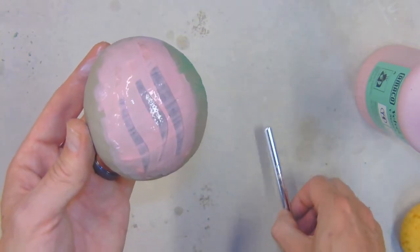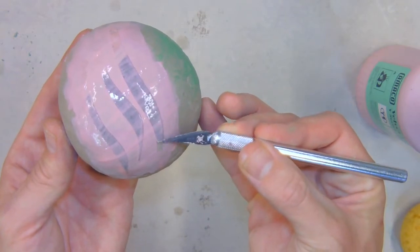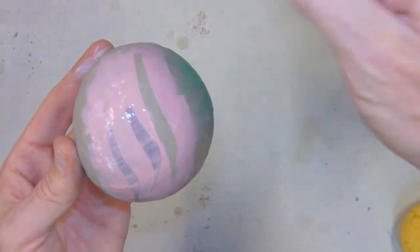Once the underglaze has dried, you can use your X-Acto knife and very carefully pick up an edge to where you can pull off the stencil.